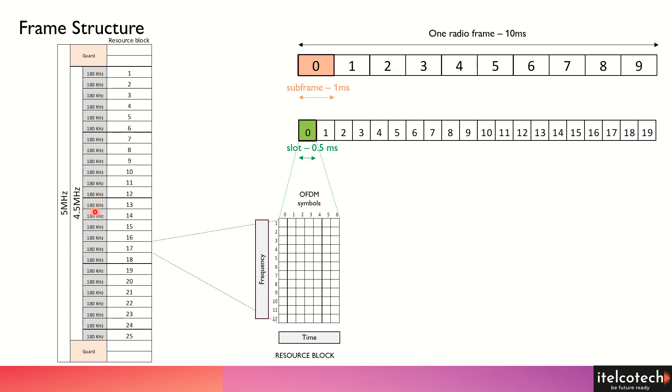In the time domain, this particular resource block consists of 12 subcarriers along with 7 OFDM symbols. The grid we can see here makes one resource block. Allocation is done basically in terms of resource blocks, though in finer granularity, it is allocated at the resource element level.